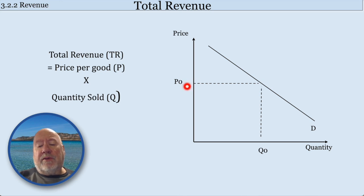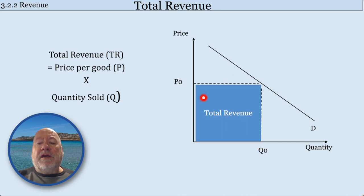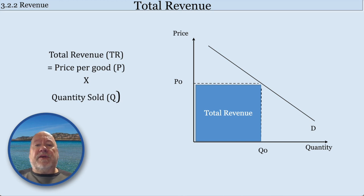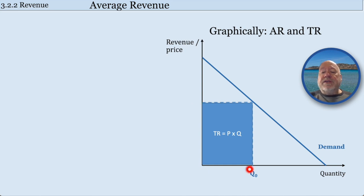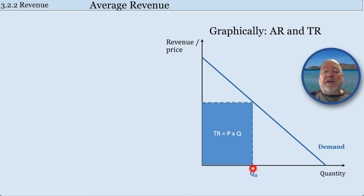So if this price here was say £5 and quantity was 100, you'd be saying your total revenue is that box there. And this is exactly the same when it comes to the individual firm. So the individual firm is faced with a demand curve, and the total revenue is the price they get per unit times the quantity — price times quantity. That box there is how you work out the total revenue once you've decided the firm is going to produce up to Q0.